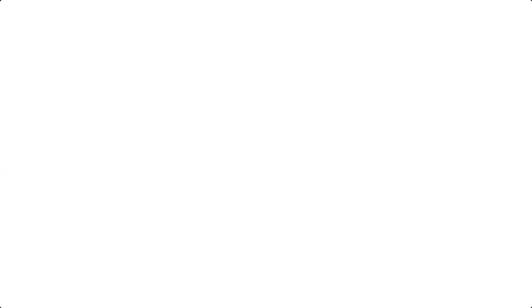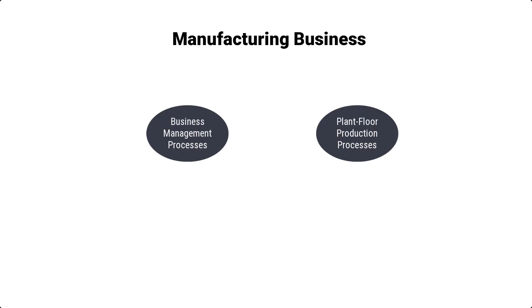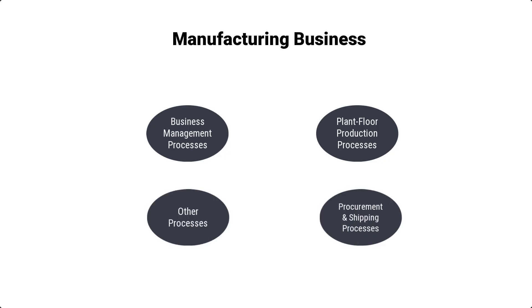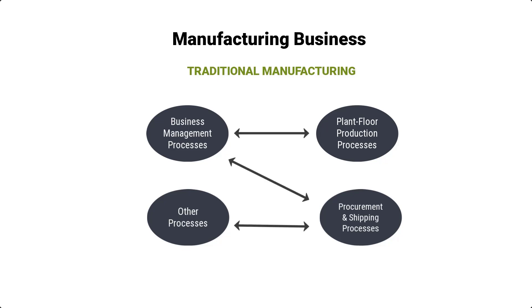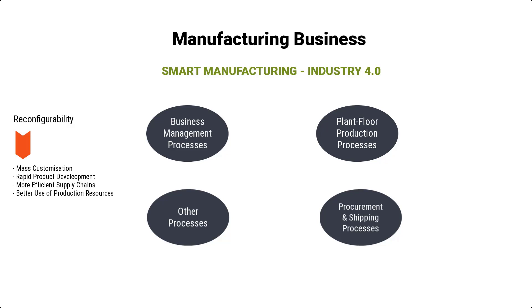The question is: exactly how does Industry 4.0 enable mass customization in manufacturing and the many other benefits that come with it? There are different aspects to running a manufacturing business — top-level strategic management processes, plant floor production processes, procurement and shipping, and so on. As is typical with traditional manufacturing, these aspects are not connected at all — they are totally isolated. The fundamental idea of Industry 4.0 is that, to achieve system reconfigurability resulting in mass customization, rapid product development, more efficient supply chains, and better use of production resources, these highly diverse aspects of manufacturing need to be integrated across the entire value chain into a common model.